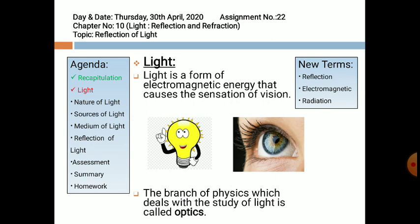Light is a form of electromagnetic energy that causes sensation of vision. If light is absent, we cannot see anything. The branch of physics which deals with the study of light is called optics. Optics is mainly divided into three parts: ray optics, wave optics, and quantum optics. Quantum optics you will be studying in higher classes, and in this chapter we will be focusing on ray optics.